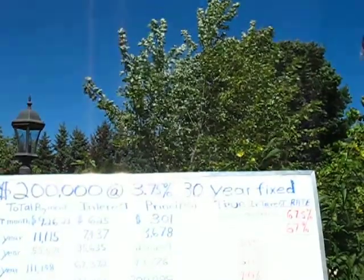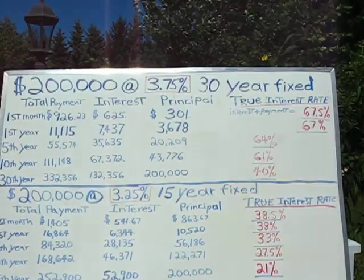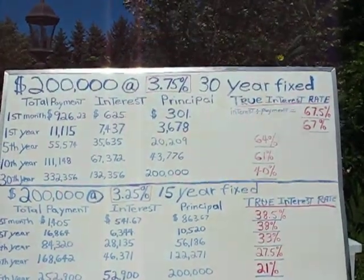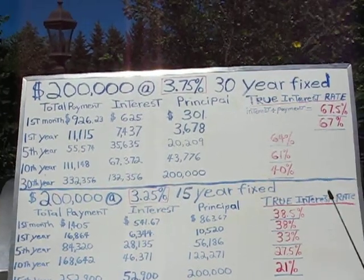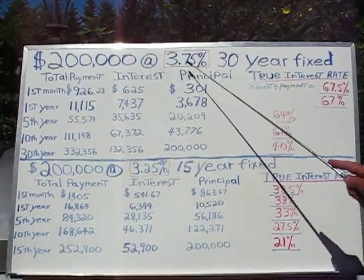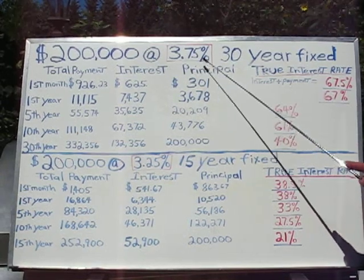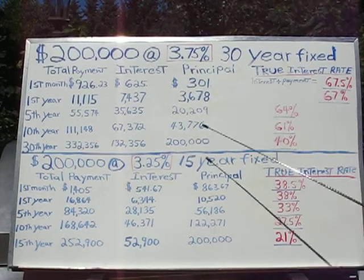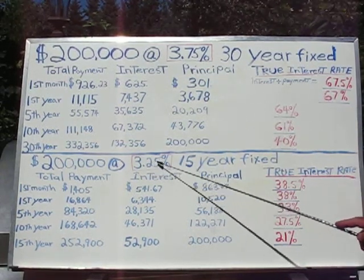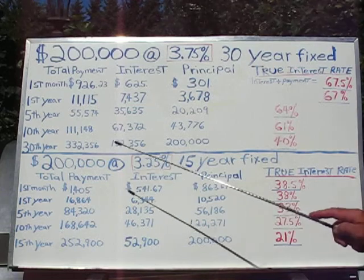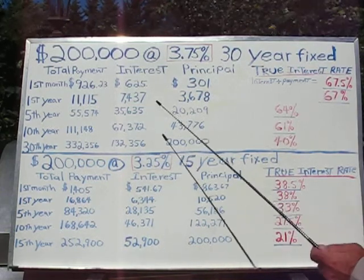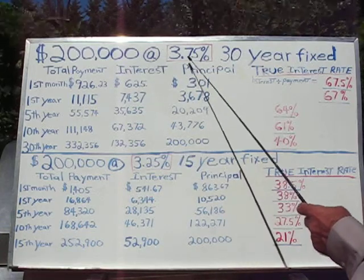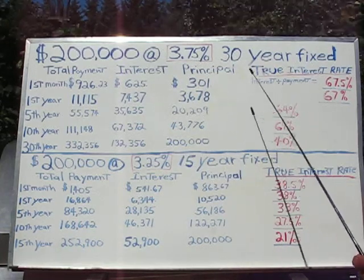What I've done is this: I went online this morning and looked up the two best rates I could find by one of our nation's top mortgage companies. Those rates are: 3.75% over a 30-year period, and 3.25% over 15 years. The example I'm about to use is a $200,000 mortgage at 3.75% over 30 years.